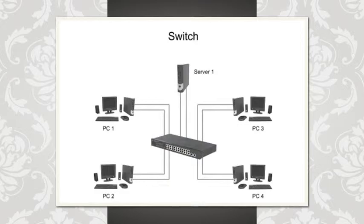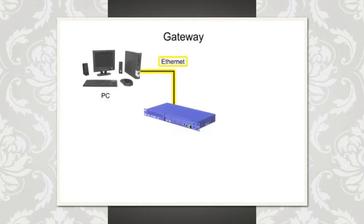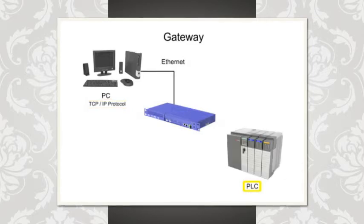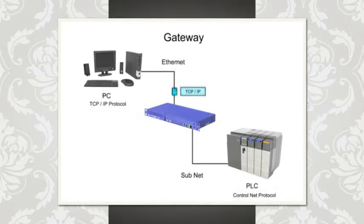When two segments of the same network have different communication formats, a gateway is needed to connect them. A gateway performs a conversion function so that a computer on an Ethernet network using a TCP/IP protocol may communicate with a PLC on a subnet using the ControlNet protocol. Even though these two protocols are incompatible, the gateway can connect them on the same network and allow them to function together.